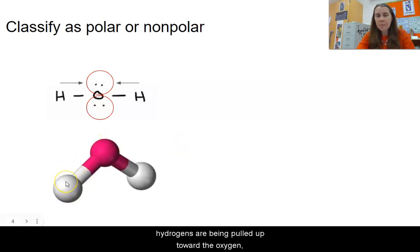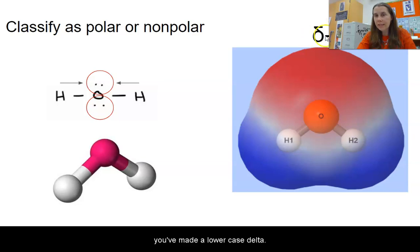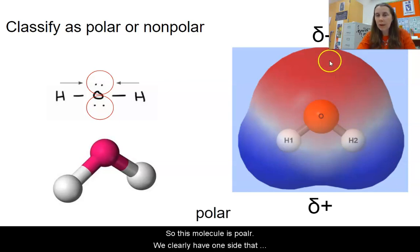So our hydrogens, the electrons from them are being pulled up toward the oxygen, which would be this pink atom here. And if we look at that one in our simulation, you can see the hydrogens have a positive charge, and the electrons are being pulled up toward the oxygen, giving it a partial minus. So we represent that with this little symbol here, it's called a delta. It looks kind of like a cross between an S and an 8. So if you were to start to make an 8 and then stop before you get all the way to the top, then you've made a lowercase delta. And then the negative charge is up here because that's the direction the electrons are being pulled, and then the partial positive charge is down here on the hydrogens. So this molecule is polar. We clearly have one side that has a negative charge and another side that has a positive charge.